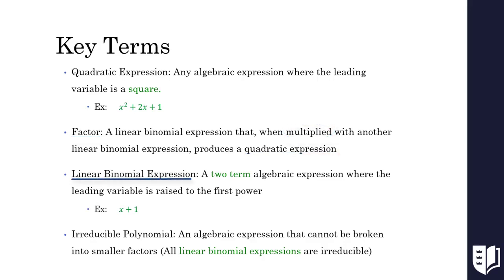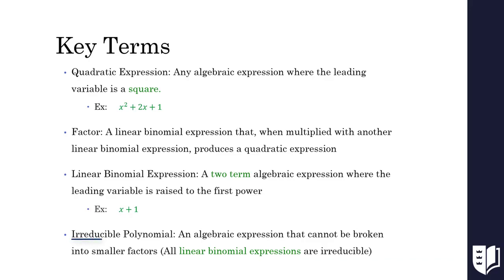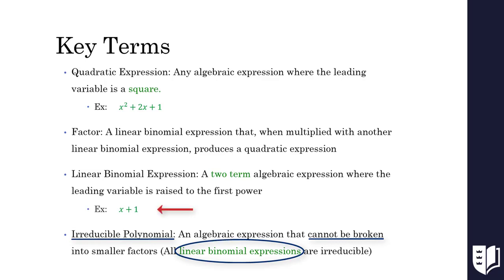A linear binomial expression is a two-term algebraic expression where the leading variable is raised to the first power. An example of a linear binomial expression is x plus 1, which is also a factor of the quadratic above. An irreducible polynomial is an algebraic expression that cannot be broken down into smaller factors. The irreducible factors we will be dealing with are linear binomial expressions. The factor x plus 1 is irreducible because it can't be factored any further.